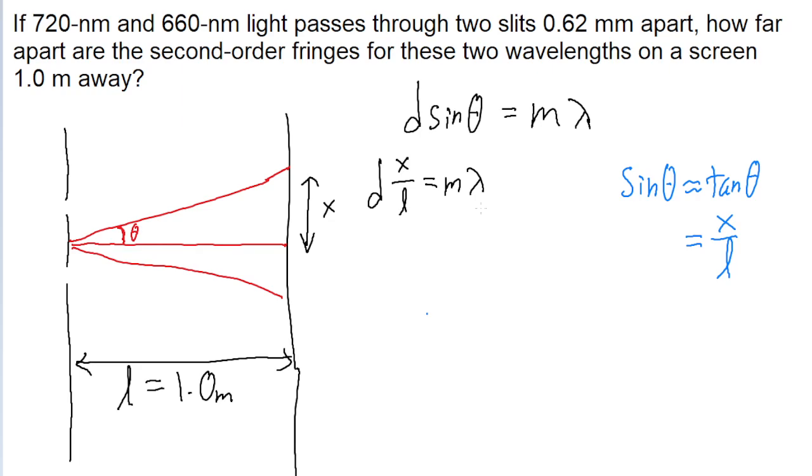The problem is specifically asking for the distance between two fringes. So we're looking for some relationship between x's. Let's algebraically rewrite this equation to solve for x. So we multiply both sides by L and divide both sides by D to see that x, the vertical displacement along the screen of the fringes, is equal to lambda multiplied by m multiplied by L divided by D.